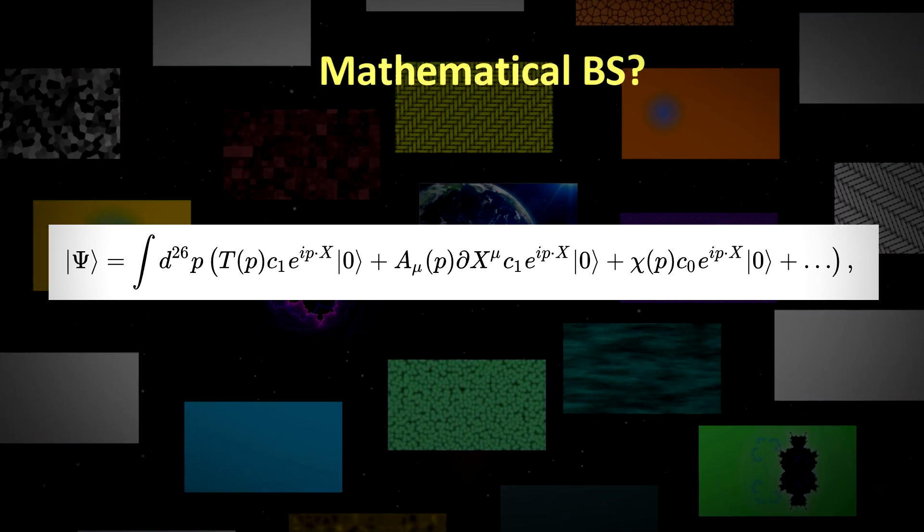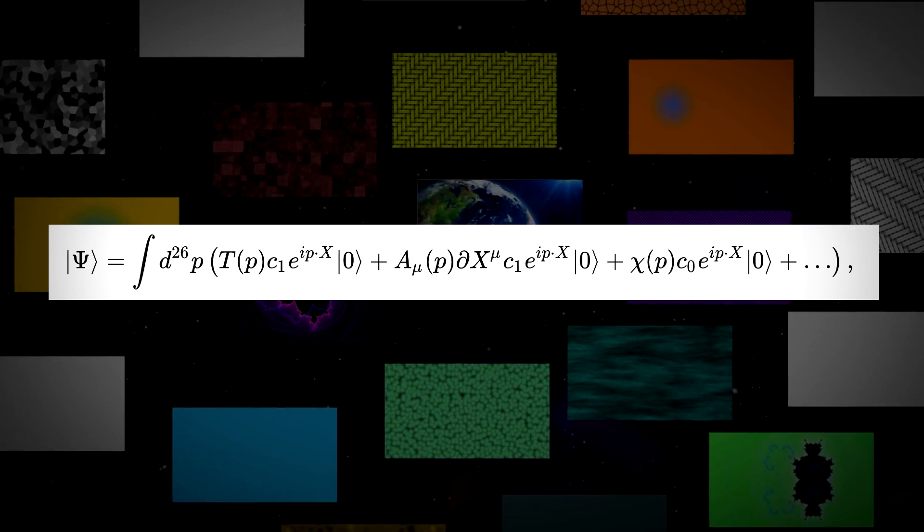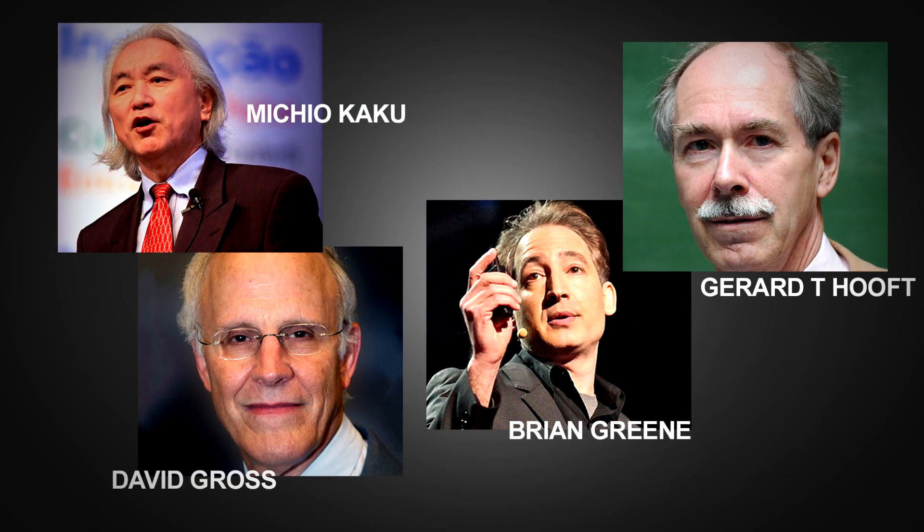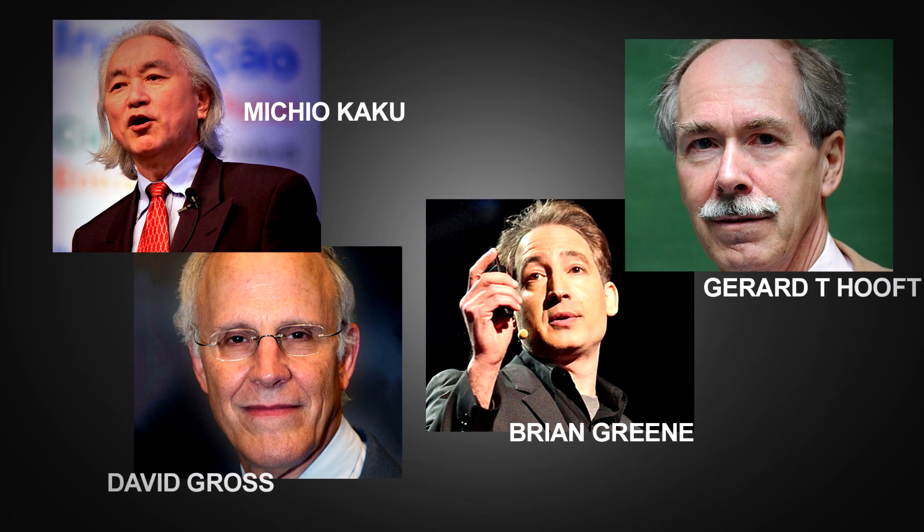But the bottom line on the verdict for string theory is this: The majority of physicists working on a theory of everything are doing it using string theory. So it boasts a lot of very smart people as its supporters. And the history of science should tell us not to dismiss ideas because they run counter to our sensibilities or intuition.